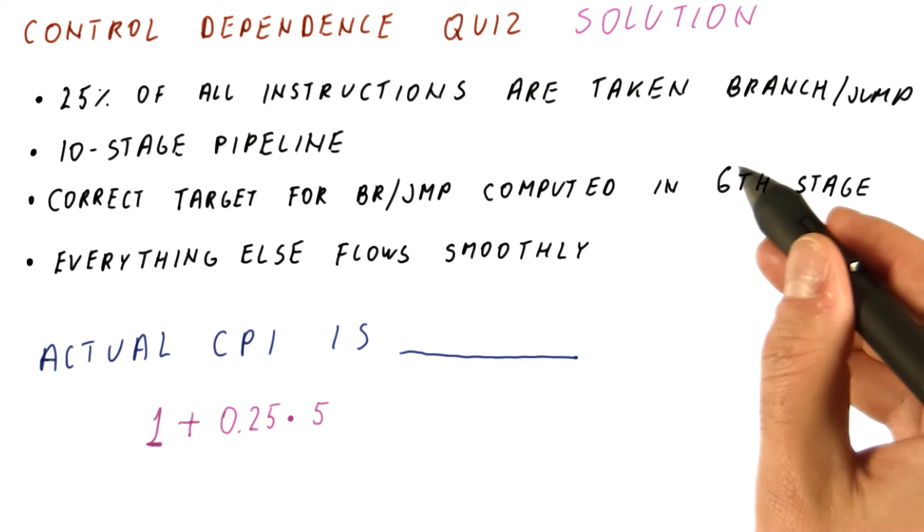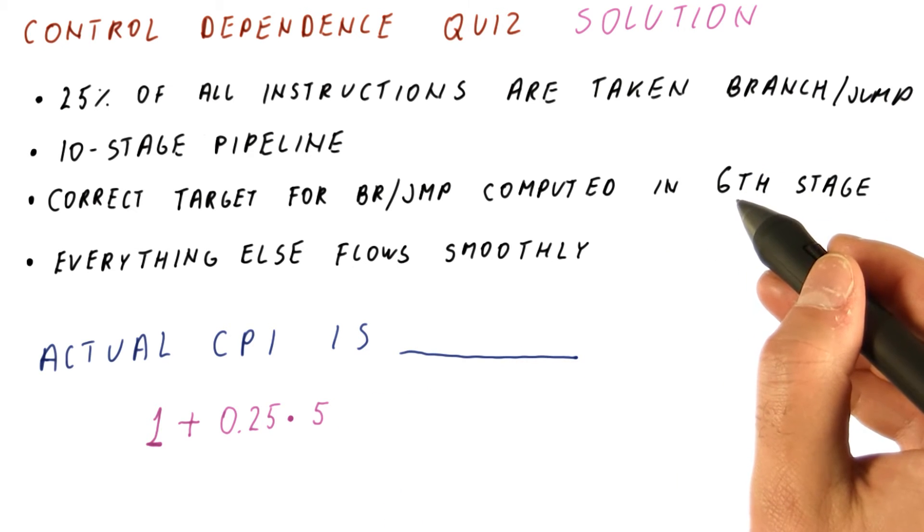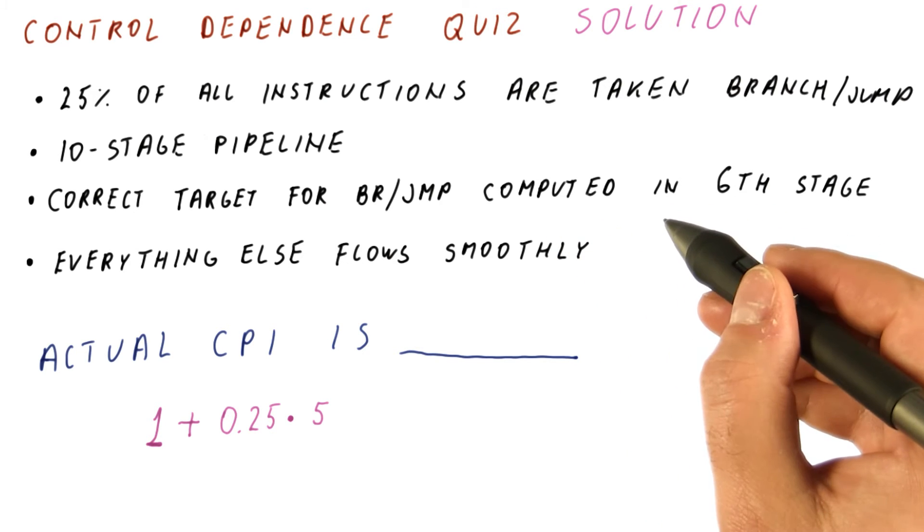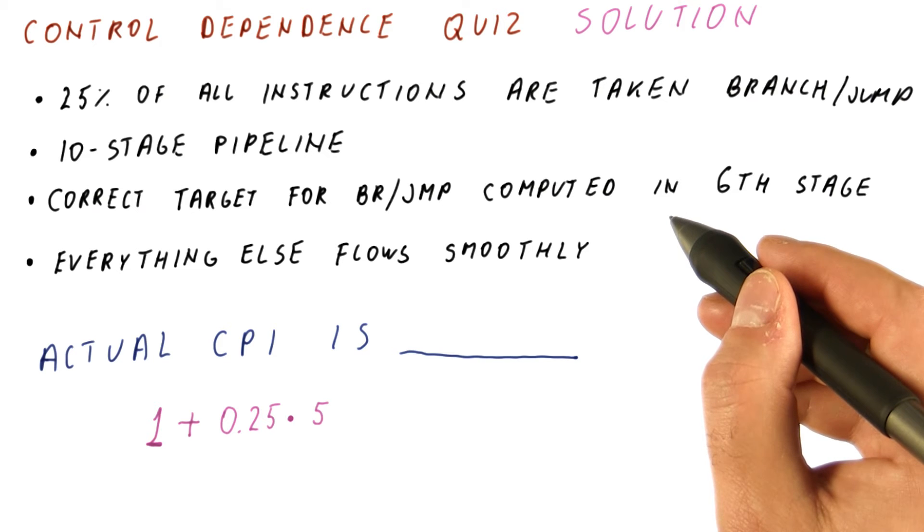Why? Because when we resolve the branch in the sixth stage, there have already been five stages worth of instructions that we fetched from the wrong place, and we have to throw them away.